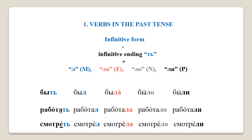To say 'I am a director,' all we need is two words: я директор. Now let's see what happens when we need to use the verb in the past tense — to talk about what we did yesterday or last year. The principle of past tense formation in Russian is pretty straightforward. The main thing to remember is that we form the past tense from the infinitive form of the verb.